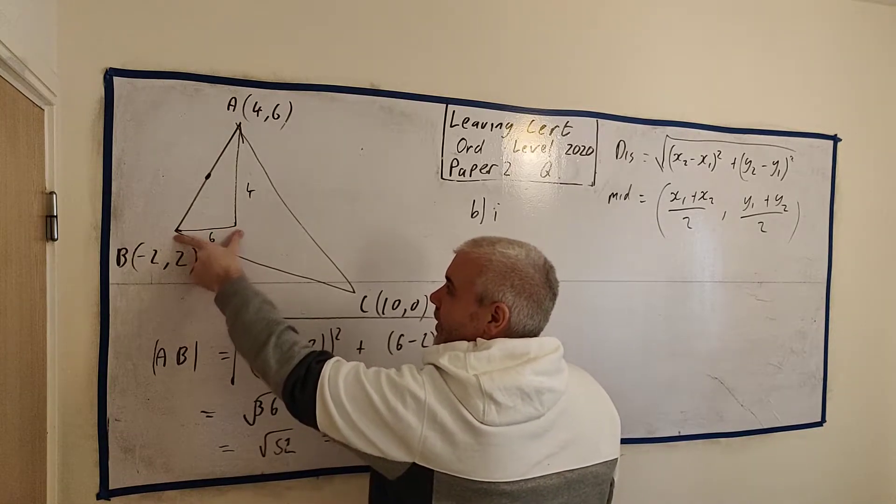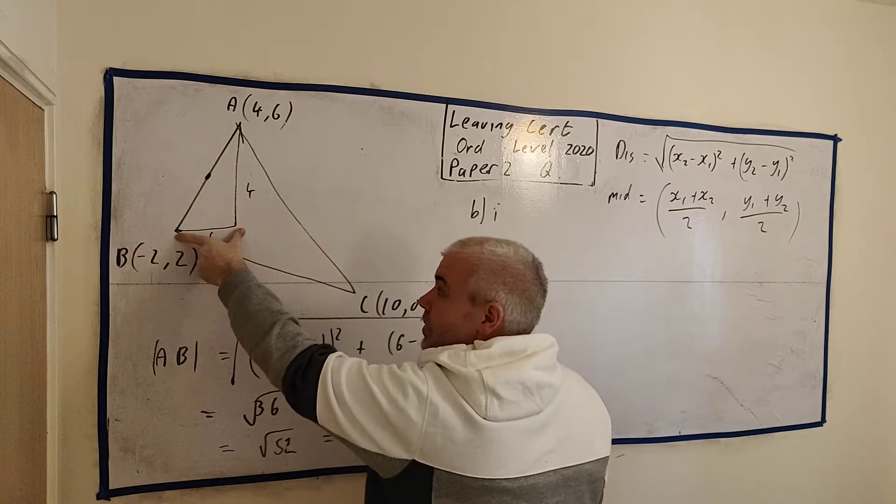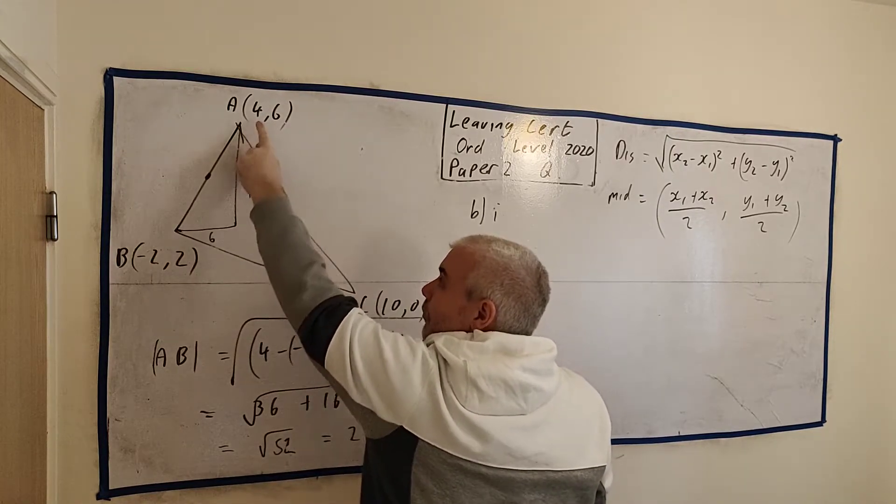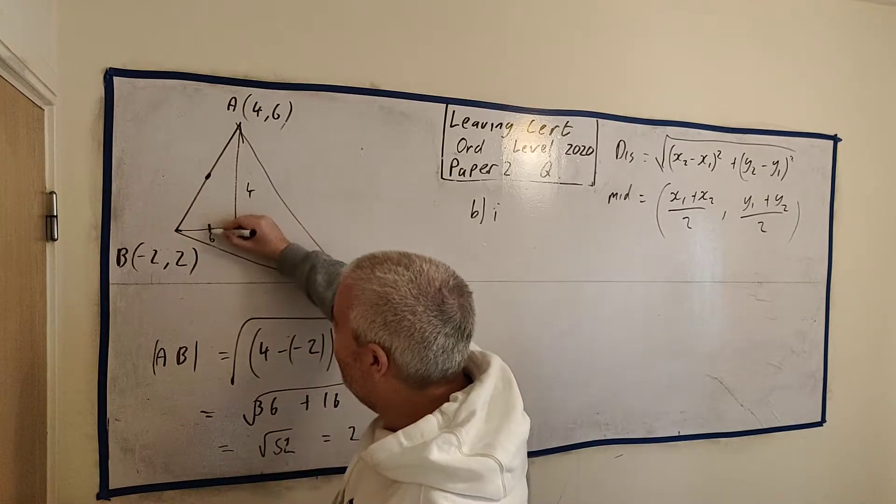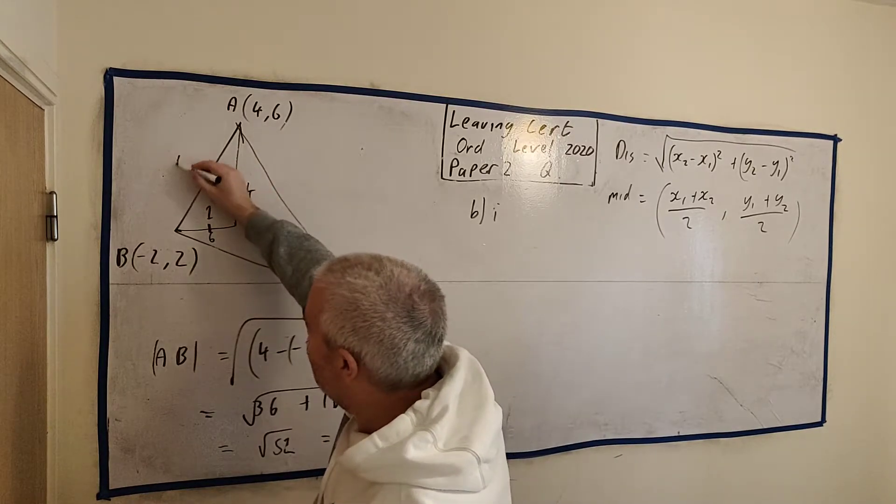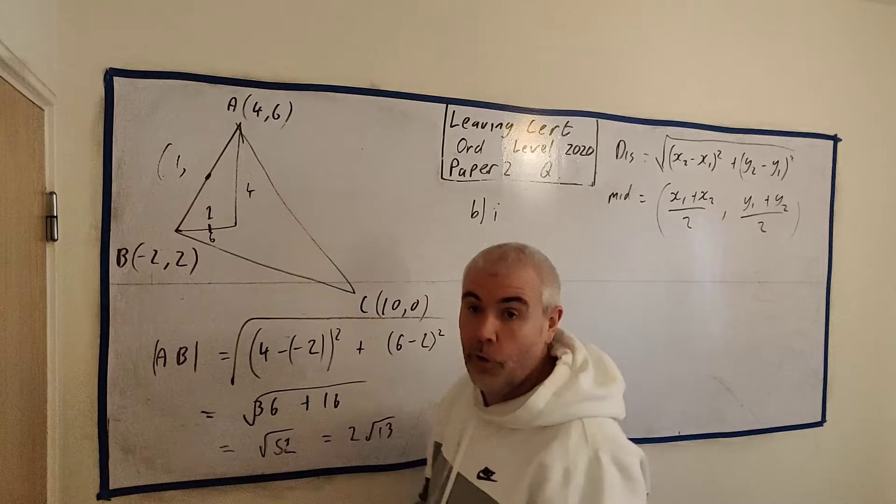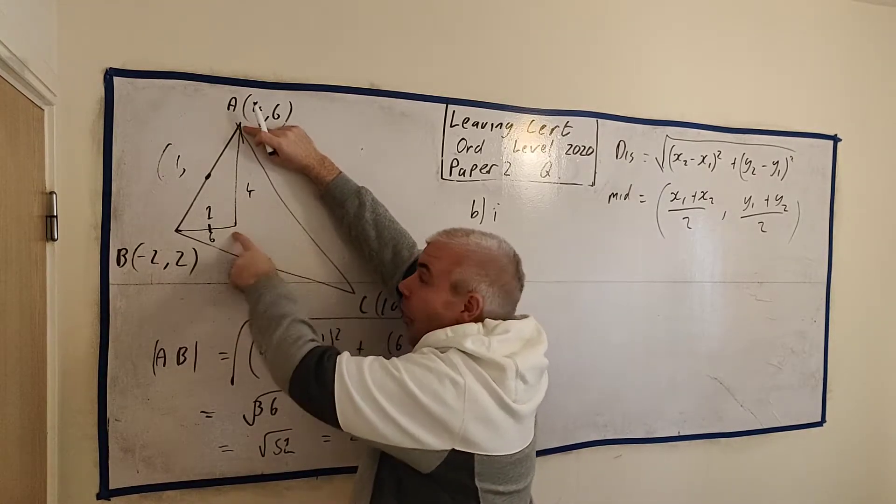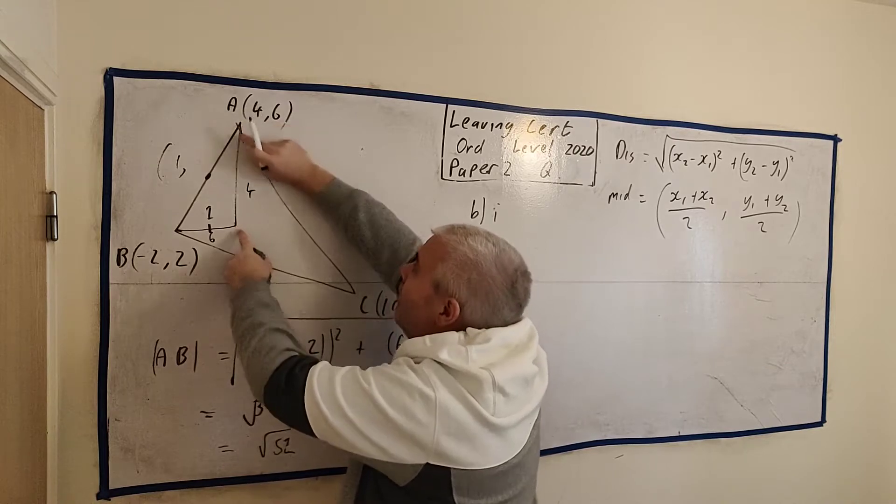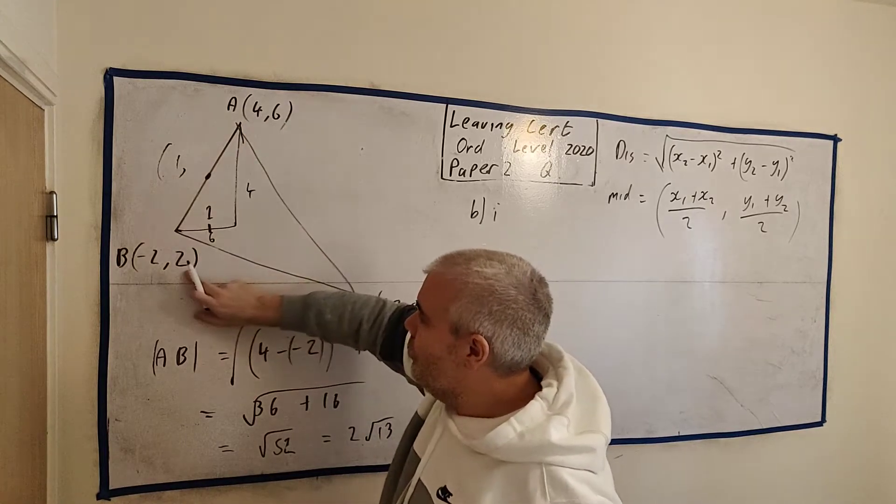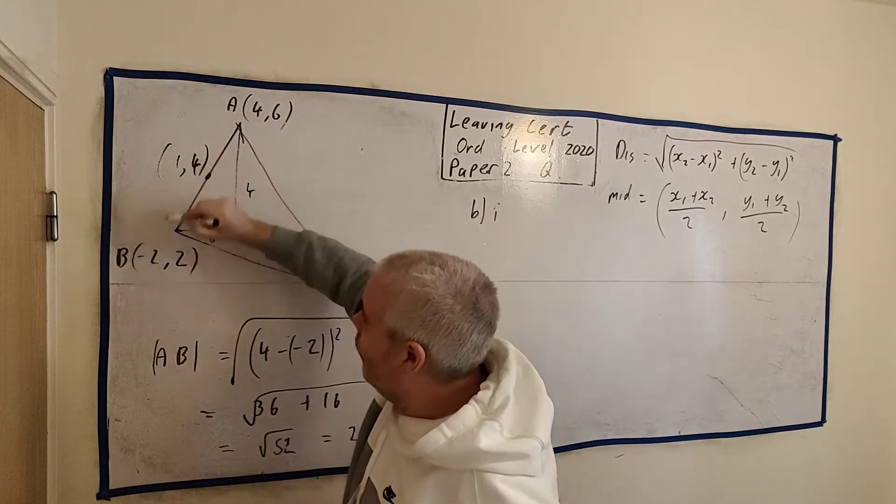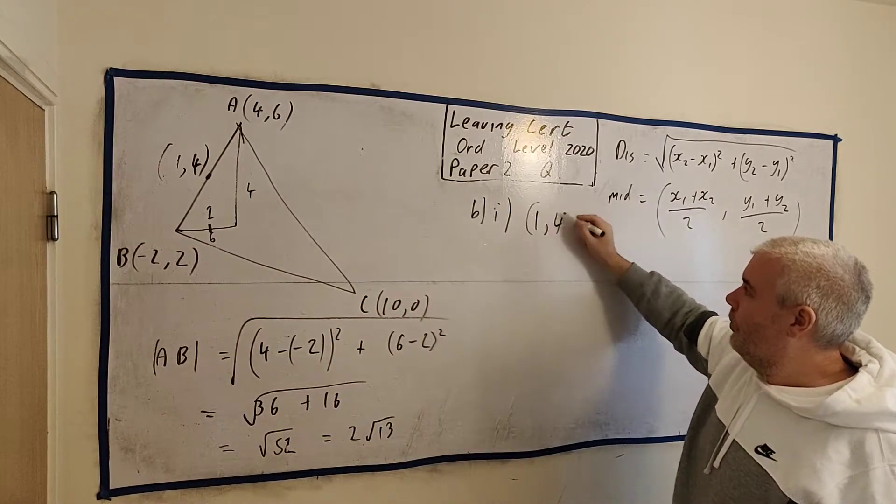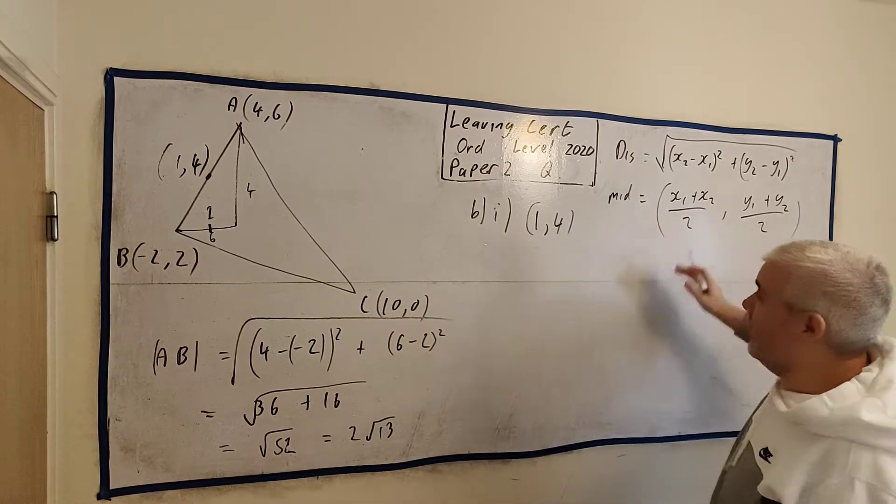It's much easier to do without it. Halfway between here and here. It's 6 long. So, 3. 3 bigger than -2. 3 smaller than 4. This middle bit must be 1. This guy must be, the x part of this, must be 1. Halfway between these two. Well, it's 4 long. So, halfway is 2. 2 smaller than 6. 2 bigger than 2. It's 4. 1, 4. That's your answer. 1, 4. You don't need a formula, but the formula will give you the same answer.